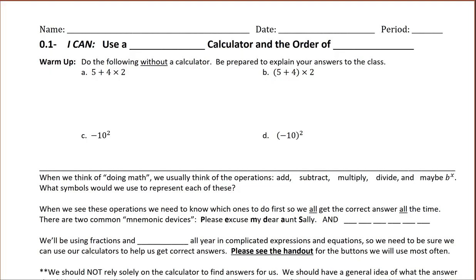This is the first video in Secondary Math 1, and this unit is about equations and calculator skills. We're going to take a look at section 0-1. The I CAN statement is: I can use a graphing calculator and the order of operations. So we're going to write down graphing calculator and the order of operations.